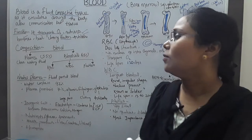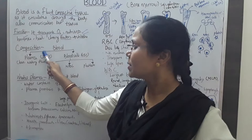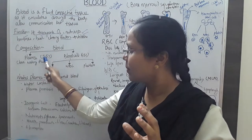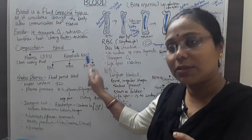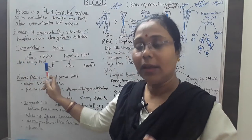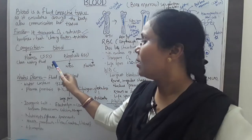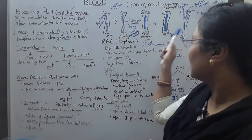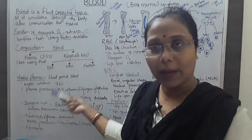Now, what is the composition of blood? Blood has two parts: plasma and blood cells. 55% of the whole blood is plasma, and the remaining 45% is blood cells. Plasma is a clear, watery fluid. Blood cells are again of three types: RBC, WBC, and platelets.